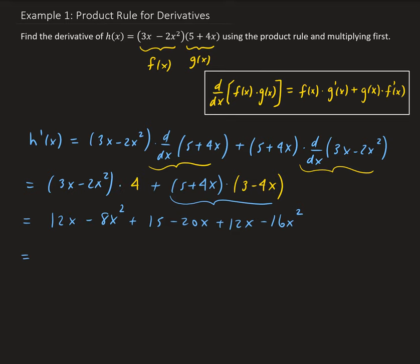Combining like terms: negative 8x squared minus 16x squared gives us negative 24x squared. Then for the x terms: 12x minus 20x plus 12x — that's 24x minus 20x — gives us positive 4x. And we're left with 15. So h prime of x equals negative 24x squared plus 4x plus 15.